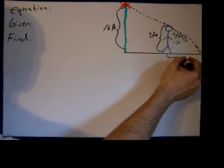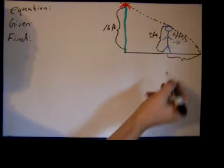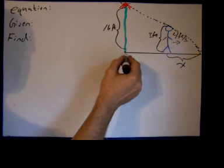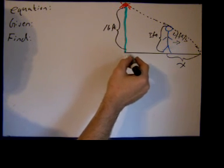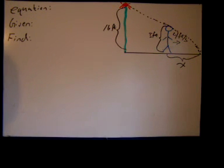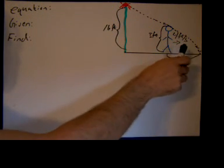This would be her shadow right here. Let's call that length of her shadow X. And then we'll call the entire length from the tip of her shadow...